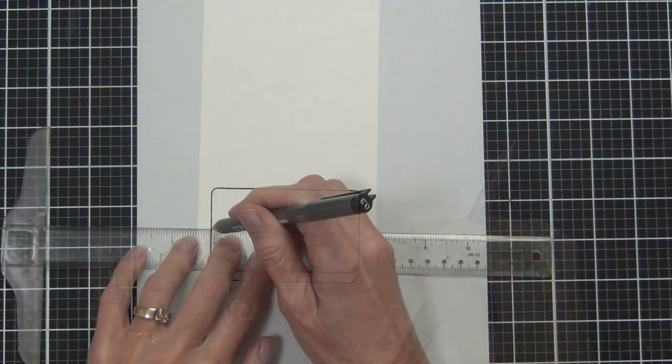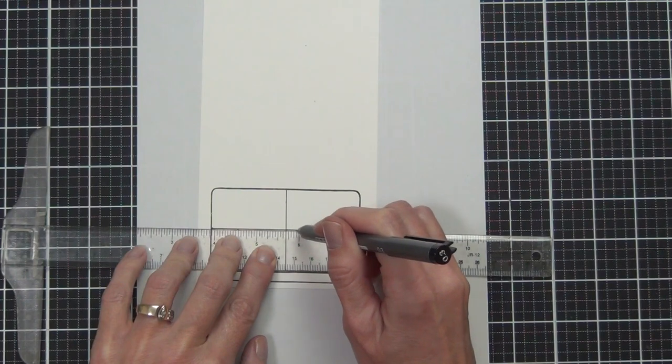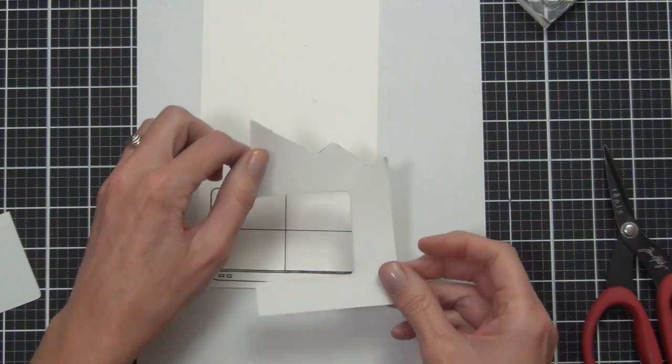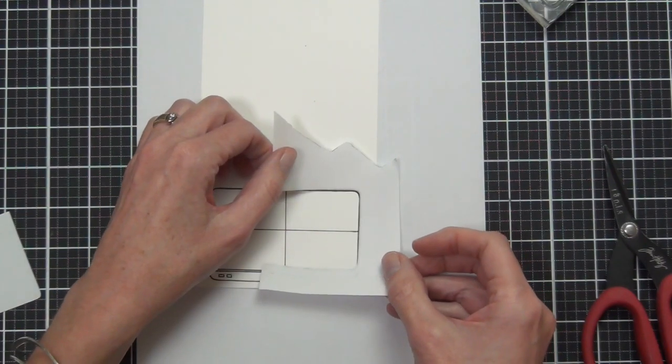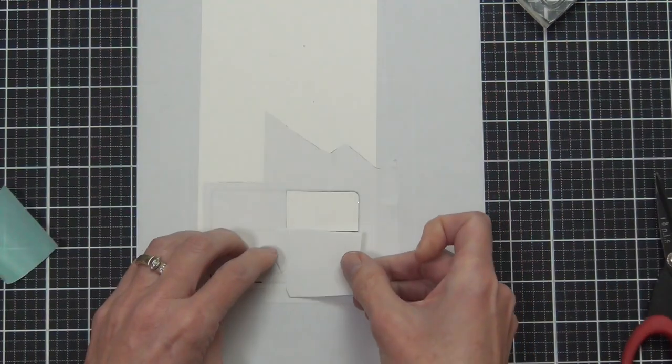I've stamped out this computer image from the voices in my head accessories set, so it's a nice large computer image here. I want to divide the screen up into four sections, which I've drawn in. This brings me to tip number two.